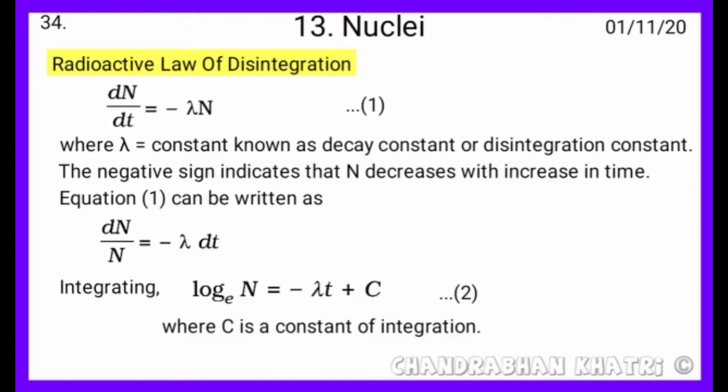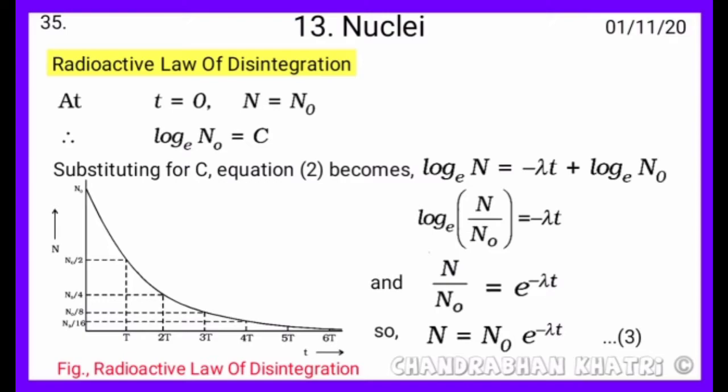At t equals 0, N equals n naught. So log n naught base e equals C. Substituting for C, equation 2 becomes log N base e equals minus lambda t plus log n naught base e.